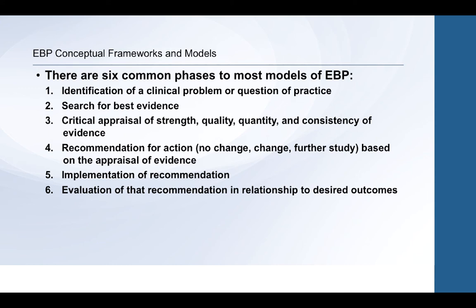Essentially there are six things you do in each of these models, and if you review them against the five A's, you can see the consistency. First: identify a problem or question of practice. Second: go out and find the best available evidence. Third: as you find that research, evaluate or critically appraise it — looking at quality, replication, reliability, and validity. Fourth: based upon that research, recommend a specific course of action to address the clinical problem. Fifth: actually go out and implement that intervention — not just recommend it, but do it.